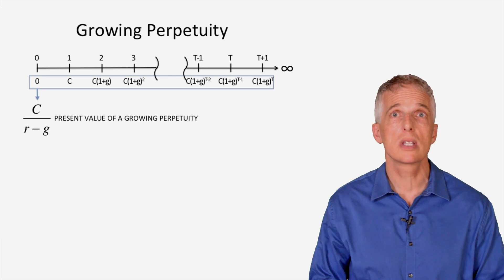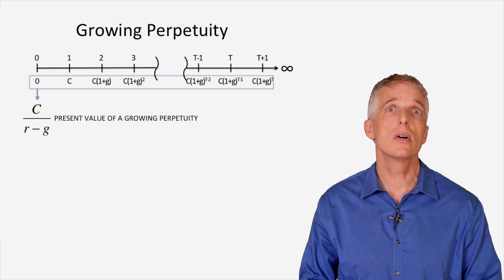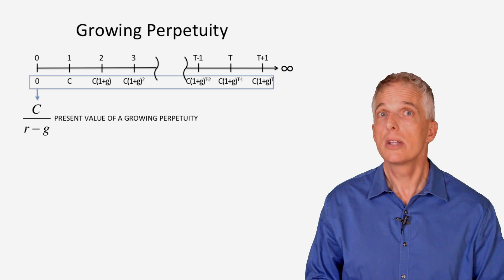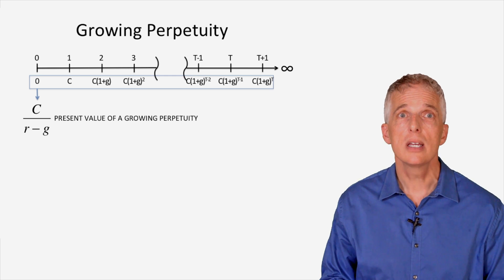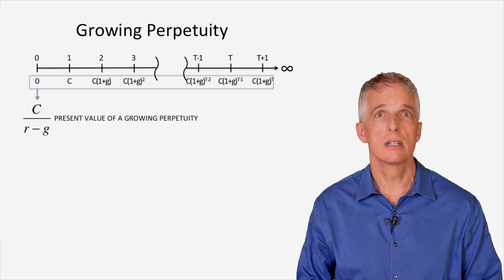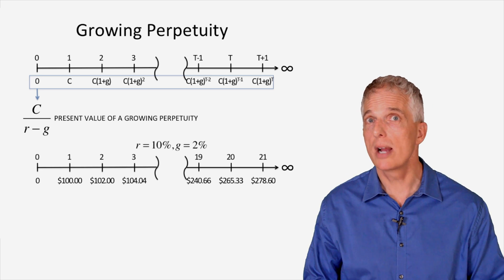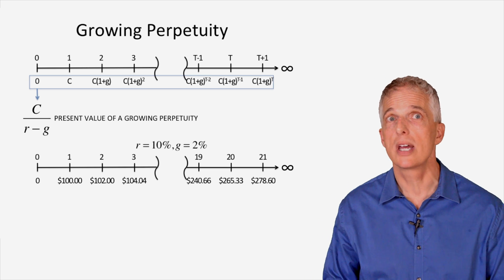A growing perpetuity begins with a cash flow C and then grows at a constant growth rate denoted G. In general, the present value of a growing perpetuity is C divided by R minus G.